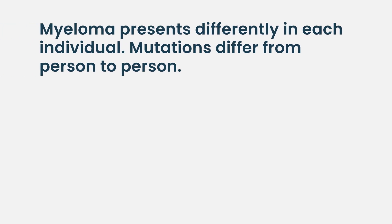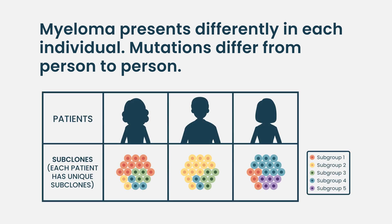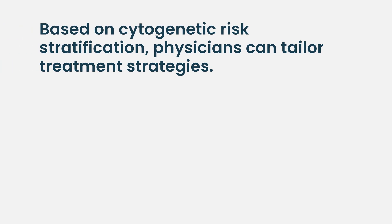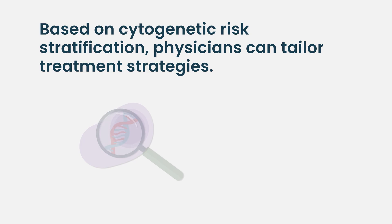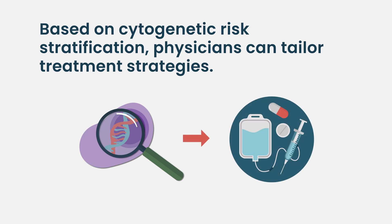Myeloma genetics is complicated — that's part of why this disease is hard to treat. There is variation in genetic events between patients: every tumor is unique, with different chromosomal abnormalities, different gene mutations, different epigenetic events, and different levels of gene expression. We now have the technology to look at all of that genetic information and make better decisions about which tumors are aggressive, which will respond well, and which might respond to bortezomib versus revlimid.